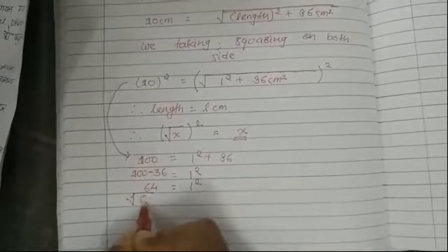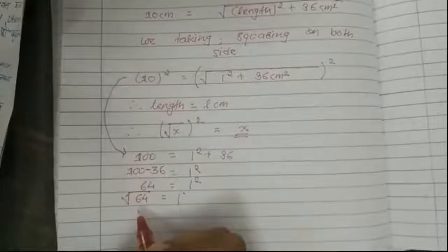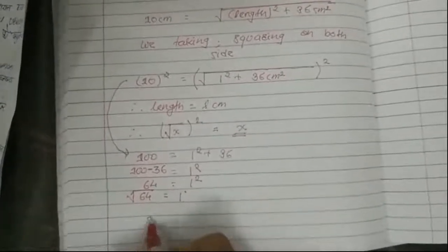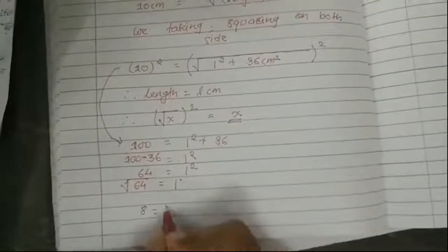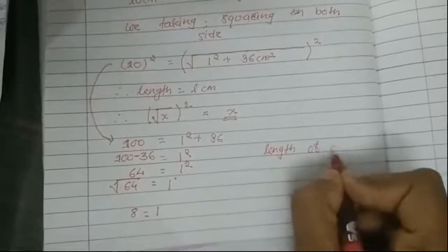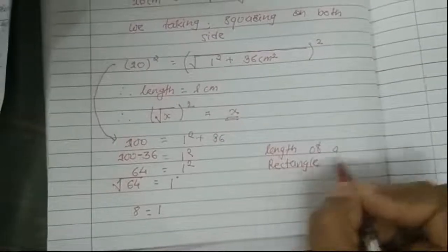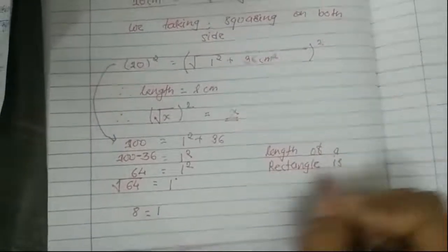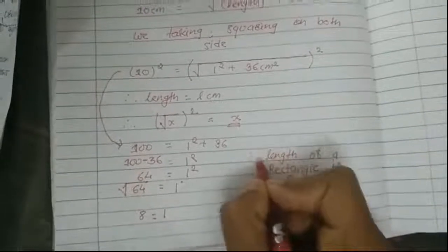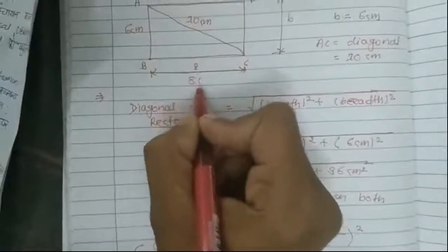So L squared equals 64. Moving the square to the right side, we take the square root of 64, which is 8. Therefore the length of the rectangle is 8 centimeters.